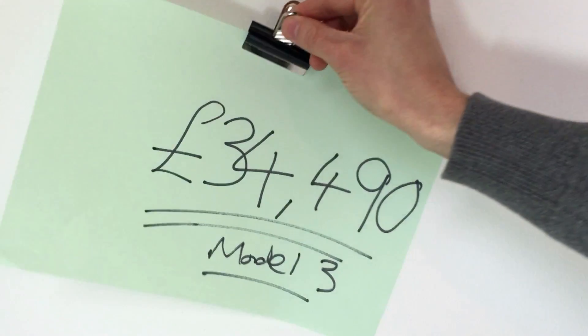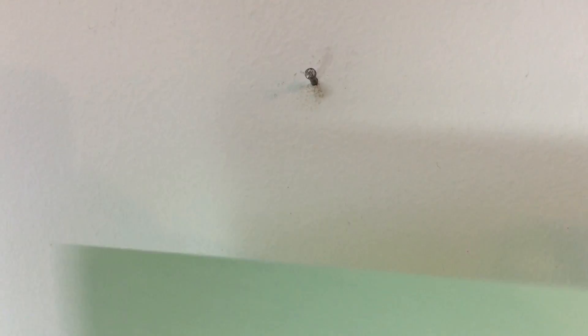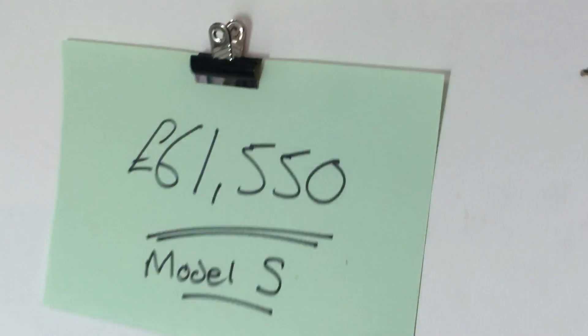So in total we're looking at around £35,000 for a moderately specced Model 3. The Model 3 is still an expensive car, but it's around £30,000 cheaper than buying a Model S. However, in the meantime, I'm going to have to save a few more of these for my Model 3.